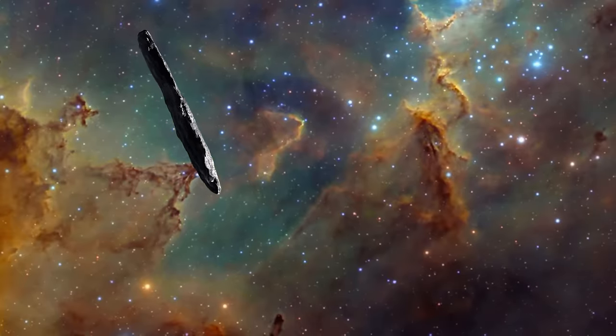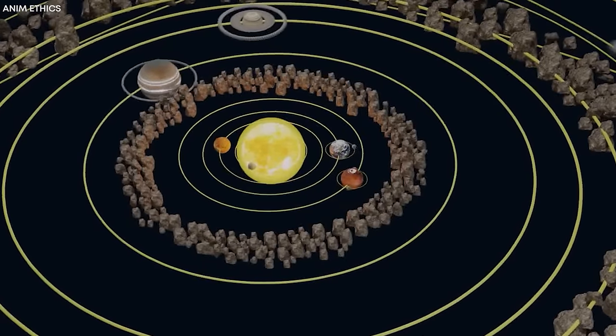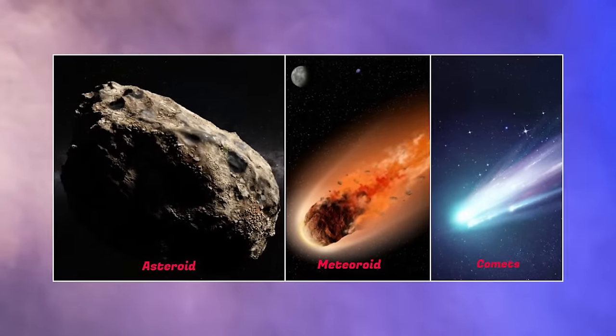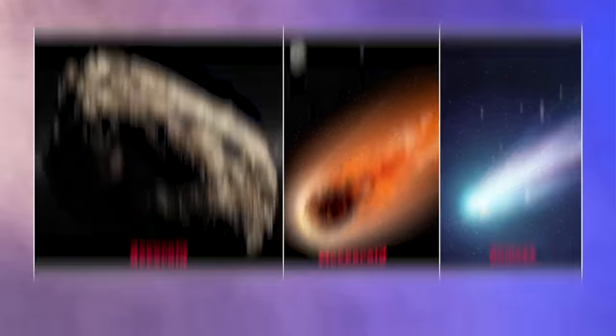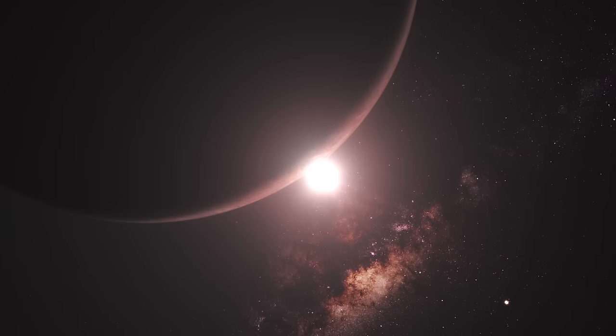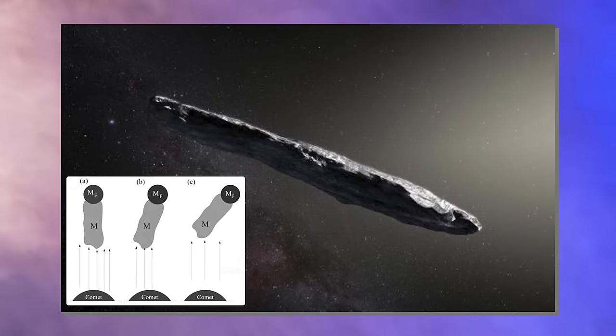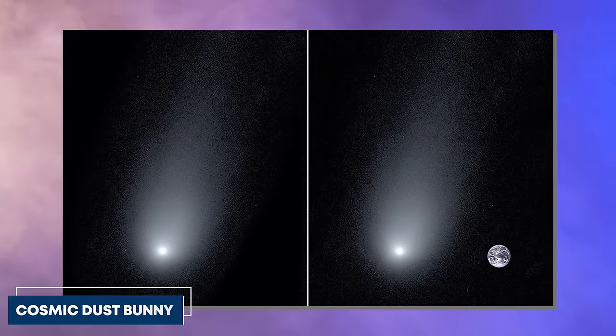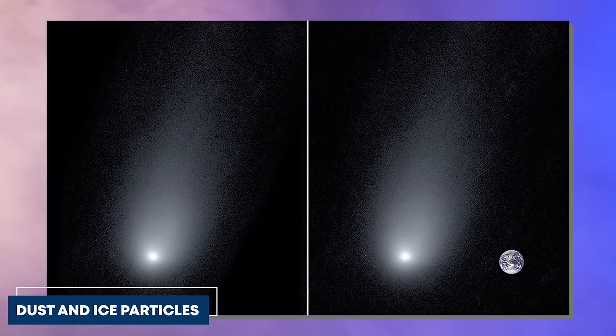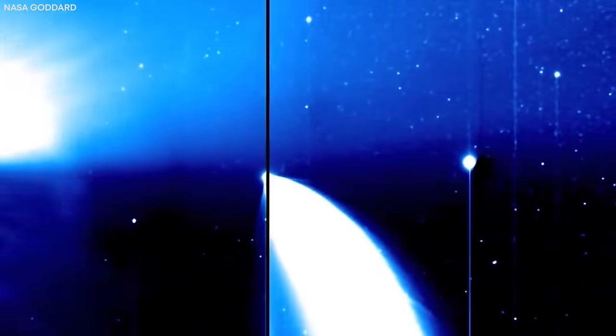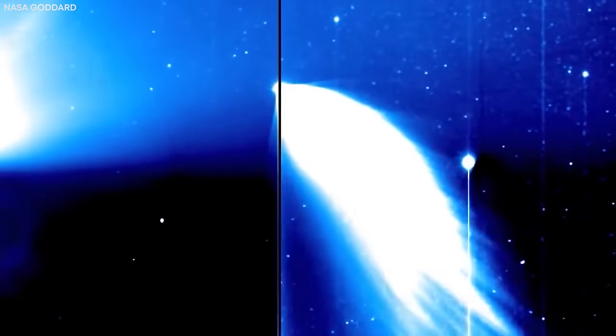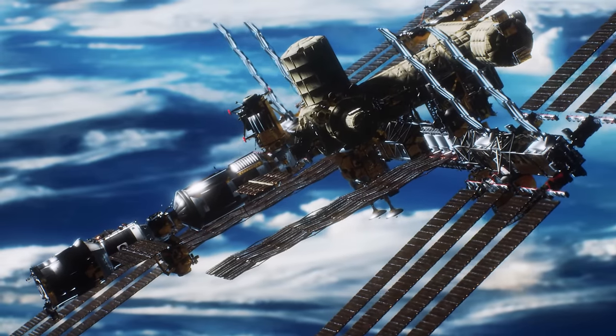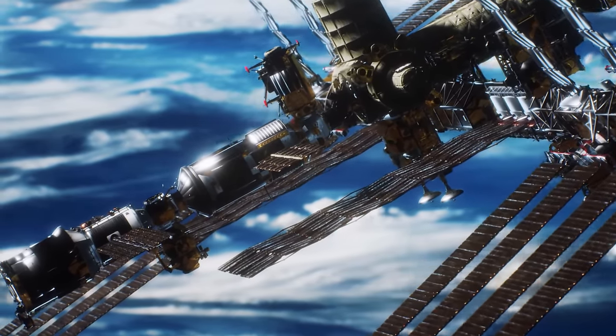While Oumuamua's true nature and origin remain a subject of debate and speculation, scientists have put forward various hypotheses to explain its unique characteristics. One possibility is that Oumuamua is a fragment of a larger object, perhaps a comet or asteroid, that was ejected from its home star system and sent on a journey through interstellar space. Another hypothesis suggests that Oumuamua could be a cosmic dust bunny, a loosely bound aggregate of dust and ice particles. There is also the intriguing possibility that Oumuamua could be an artificial object.